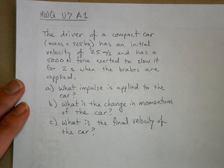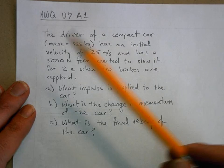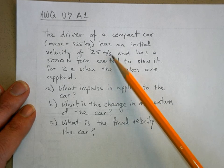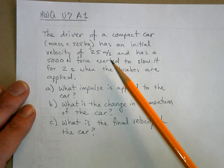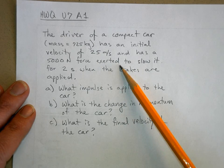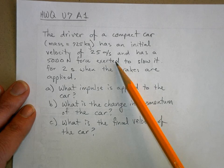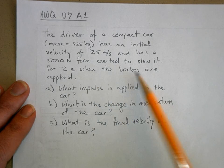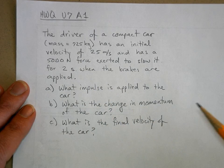Okay the problem was, and I am recording this so behave yourselves. The driver of a compact car of this mass has an initial velocity of 25. Now in the actual homework problem in the book this was a slightly different number I didn't want to take the time to figure out what it was, and has a 5,000 Newton force exerted to slow it for two seconds when the brakes are applied. So it's worded a little differently too.